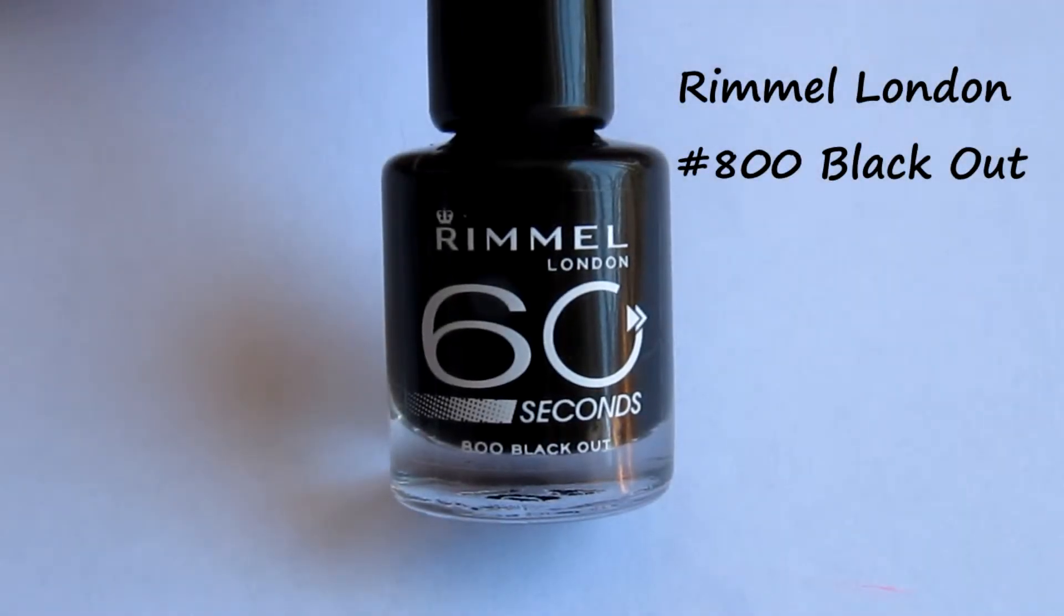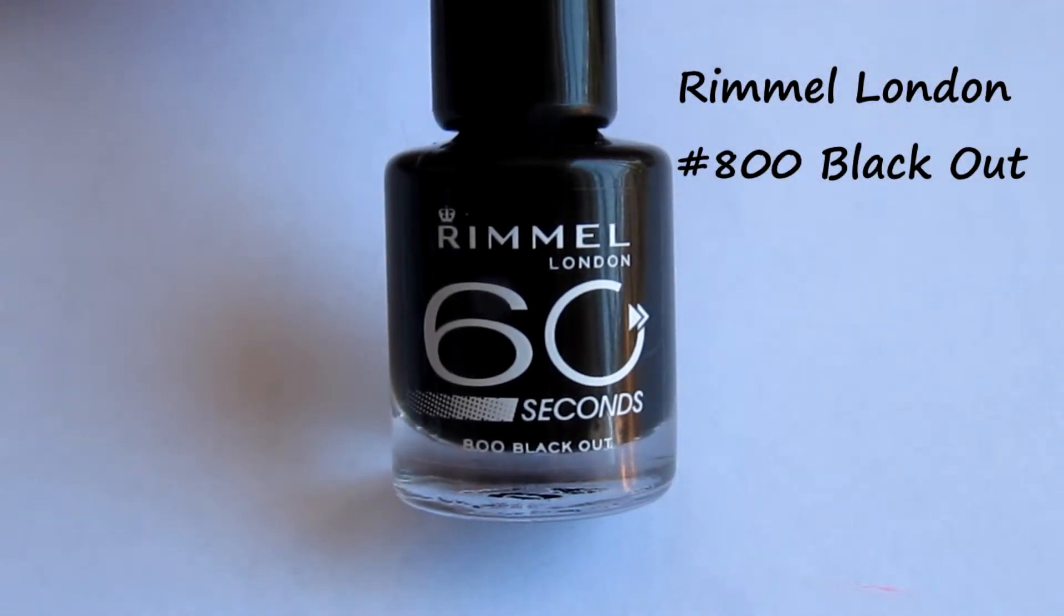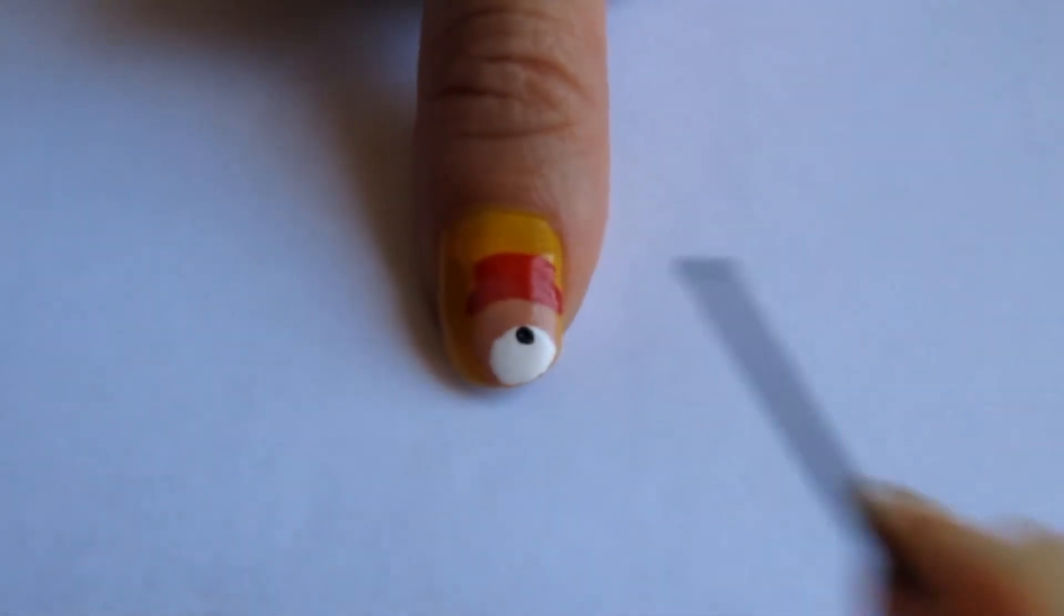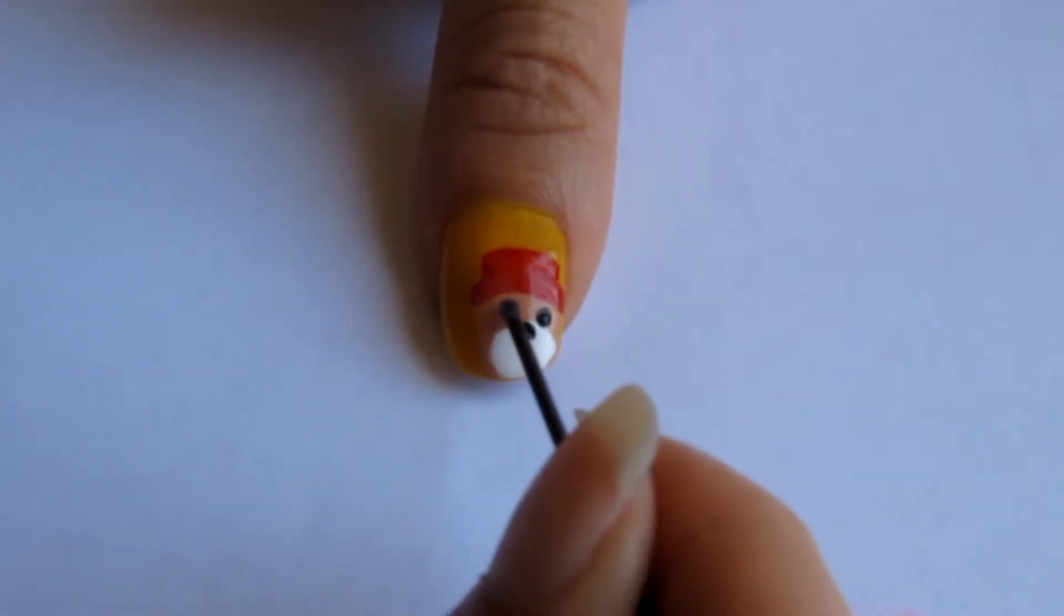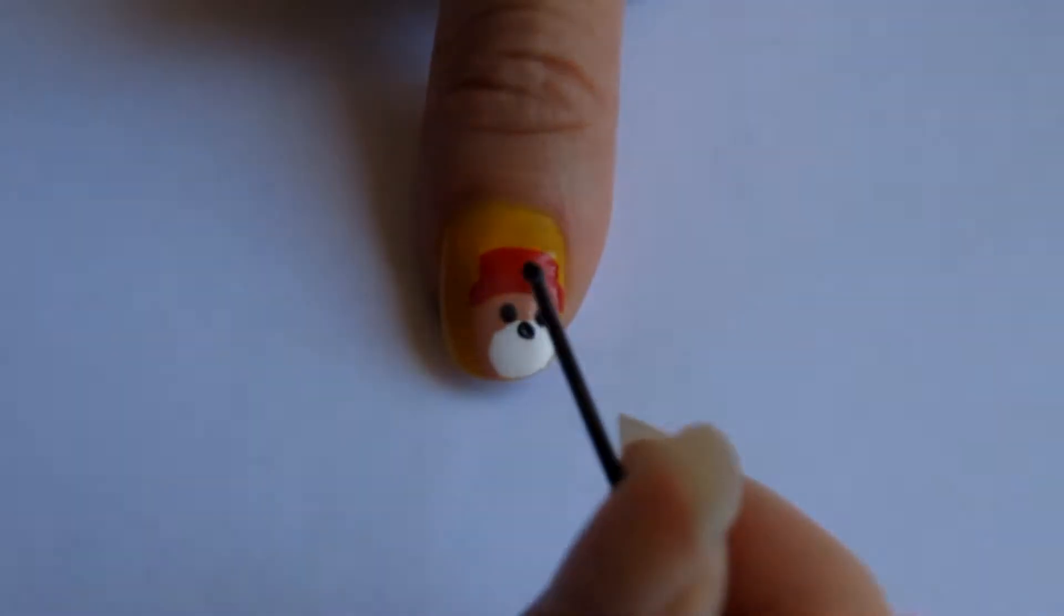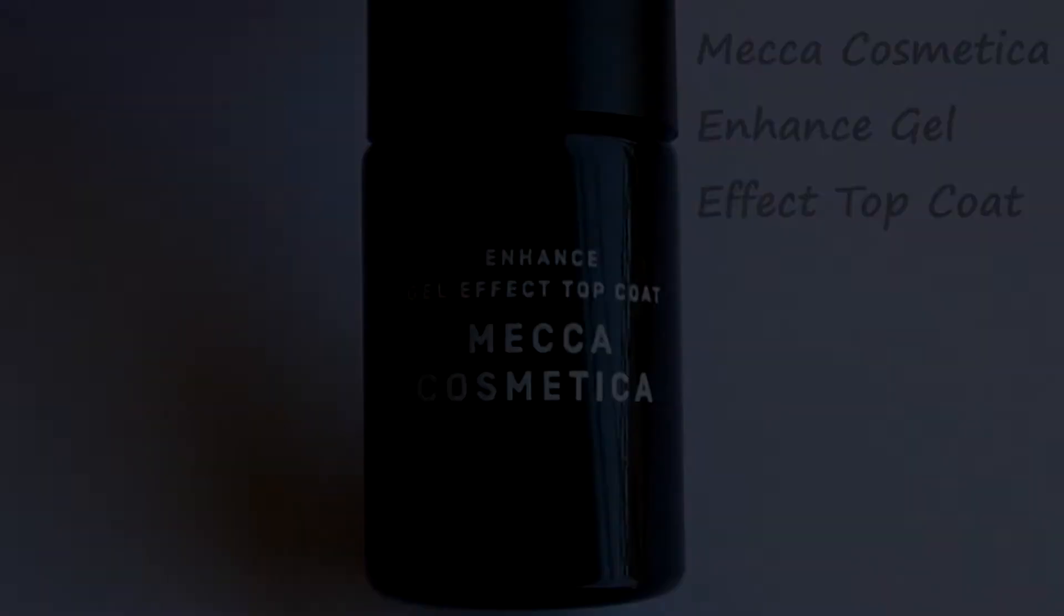Next use a black polish like this Rimmel 60 Seconds in Blackout to dot on his eyes and nose with a bobby pin. Finish off with a top coat like this Mecca Cosmetica one and you're done.